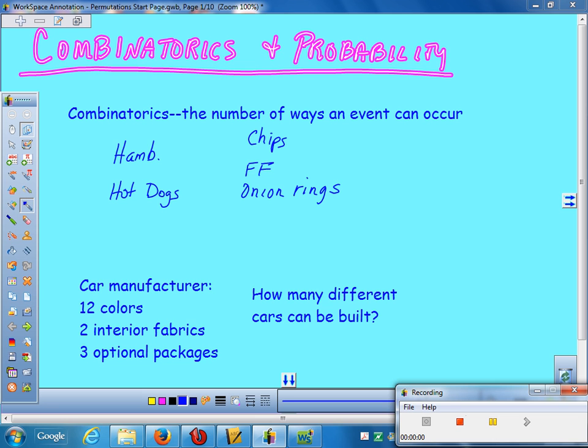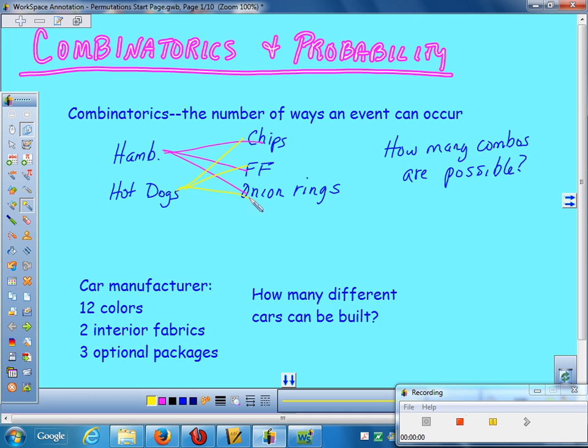How many different combinations of meals did we get? How did you come up with that? Six would be the correct answer. You can, just since this is a small number of items, you could go, well, I'm going to have a hamburger with chips, a hamburger with french fries, and a hamburger with onion rings. Or I could have a hot dog with each of those, which means I'm going to end up with six different meals. But mathematically, what could I do? Yeah, there were two ways to have the entree, three ways to have the side, and so together, we've got six, and we've multiplied them.